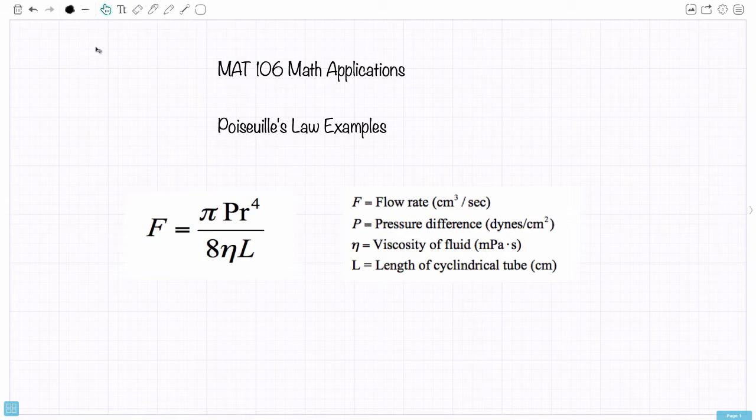We also need to know the viscosity of the fluid, which is typically given in pascal seconds or millipascal seconds. It's a measure of the thickness of the fluid. And we also need to know the length of the cylindrical tube. It would be some length that often would be given in meters or centimeters.